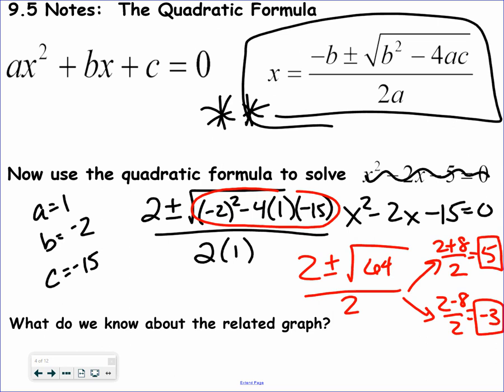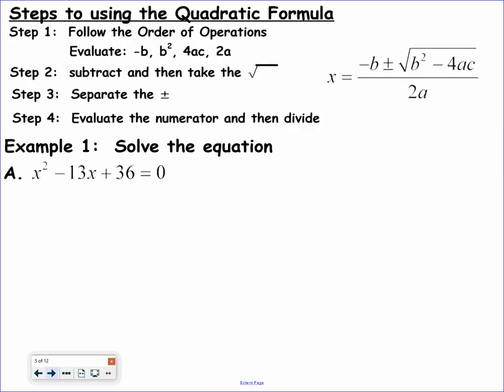A lot of times things are not factorable, so this formula allows us to solve things that aren't always factorable. What would the graph look like? We'd have a parabola that crosses at (5, 0) and at (negative 3, 0). So solved by graphing, solved by the quadratic formula, and solved by factoring are all legitimate methods.